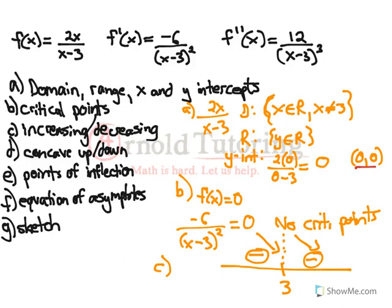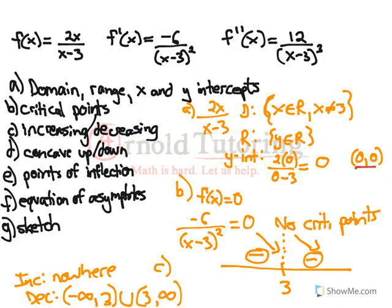So this means that the function is decreasing everywhere. We know it's undefined at 3, but on both sides the function's going to be decreasing. So we would say it's increasing nowhere, and if we wanted to write decreasing in interval notation, I would write it's decreasing from negative infinity to 3, and then again from 3 to infinity.